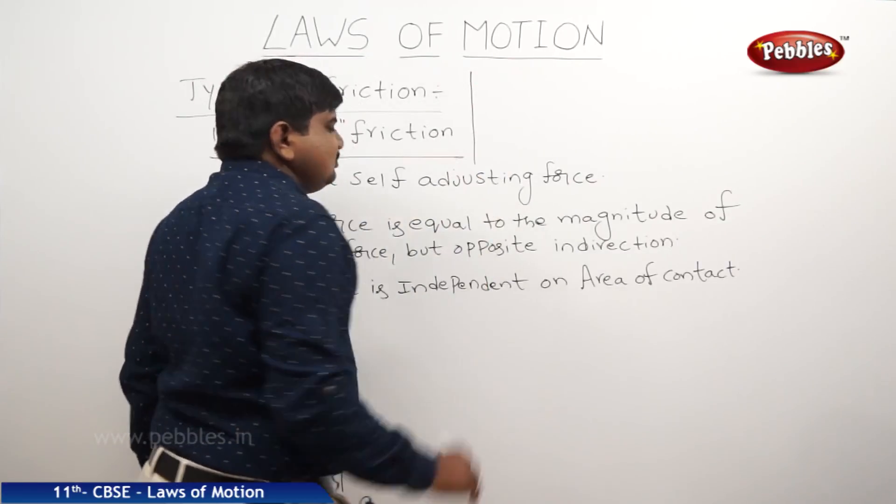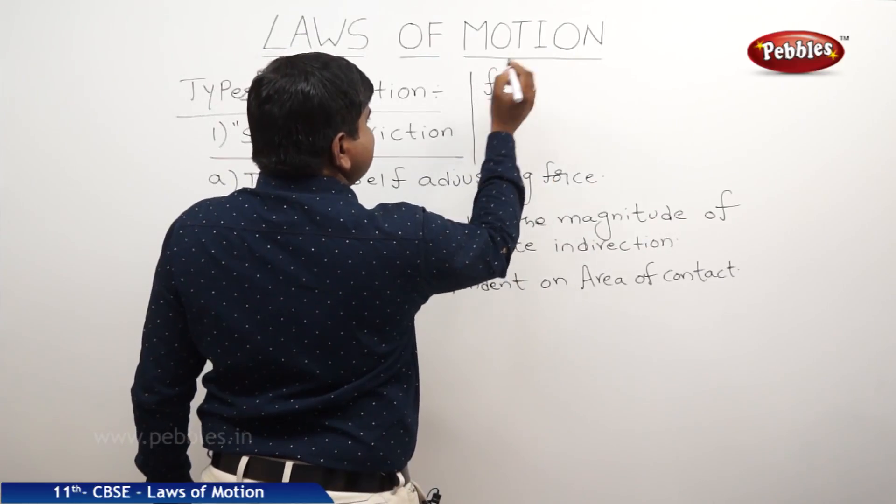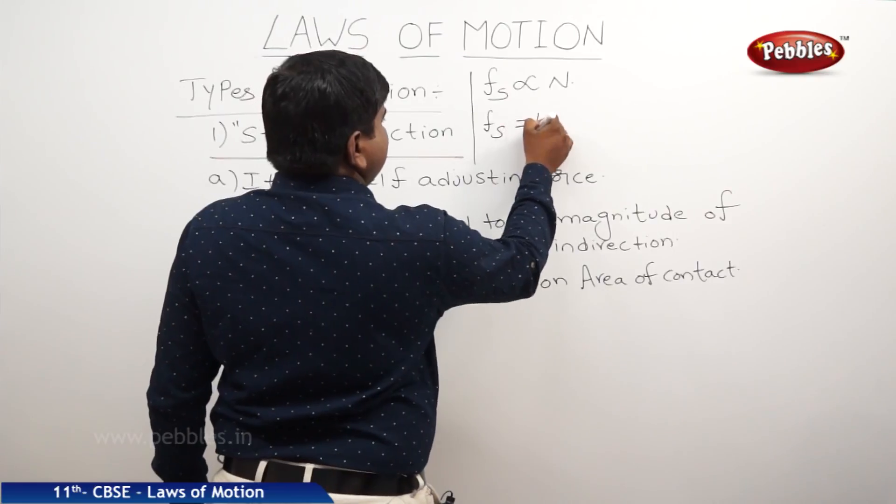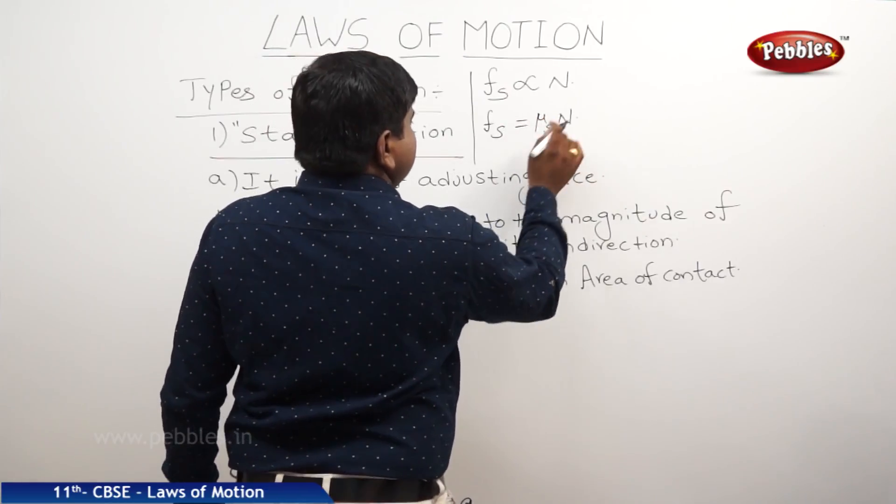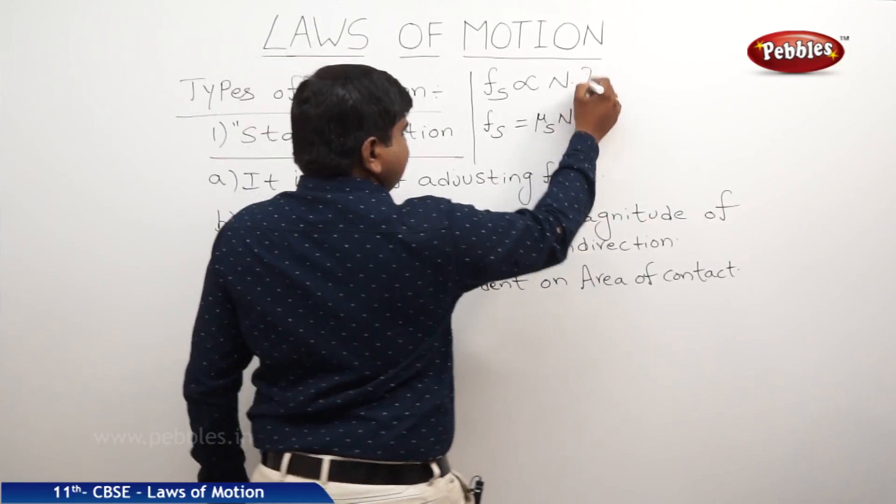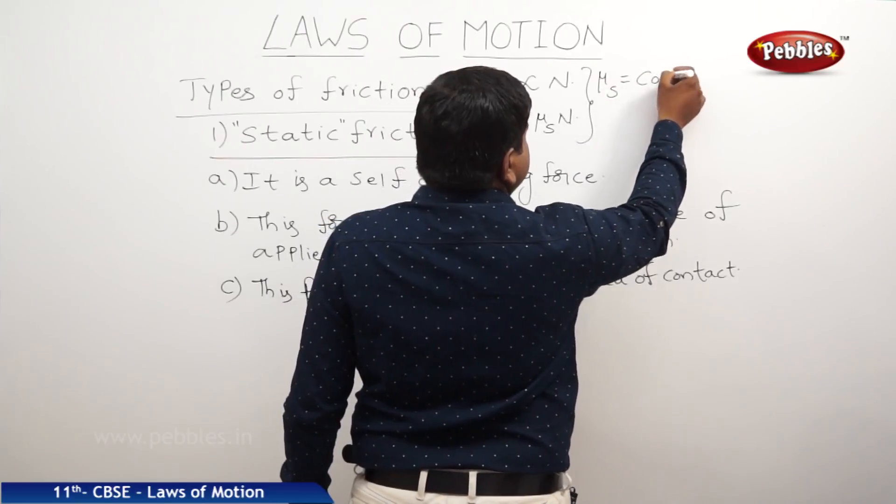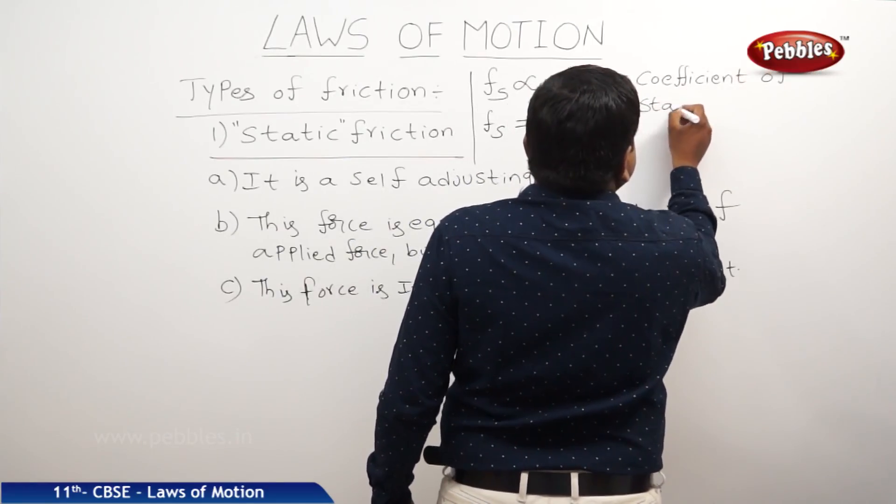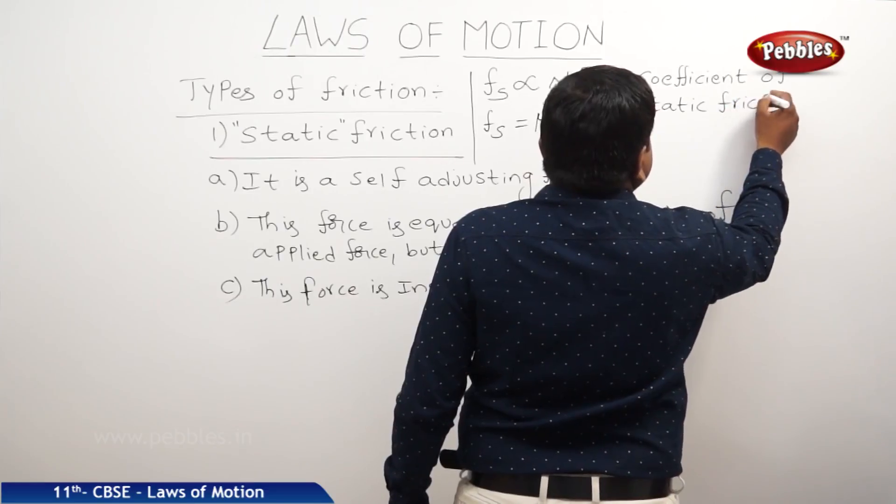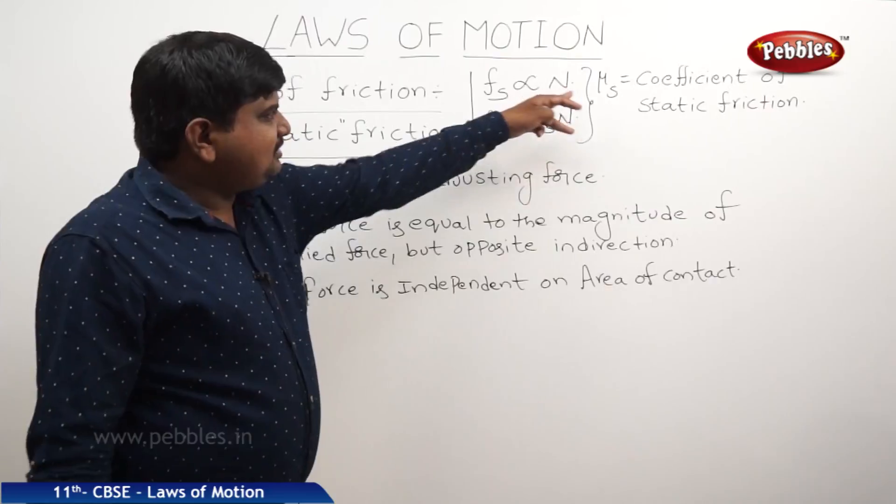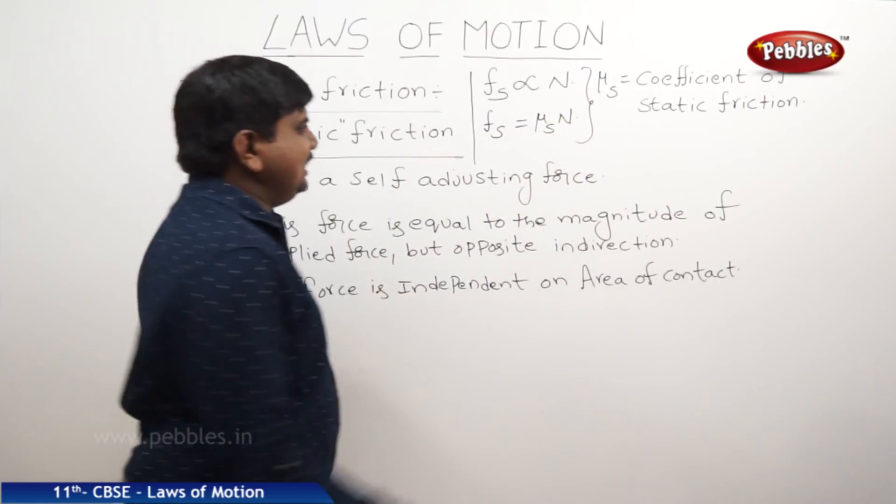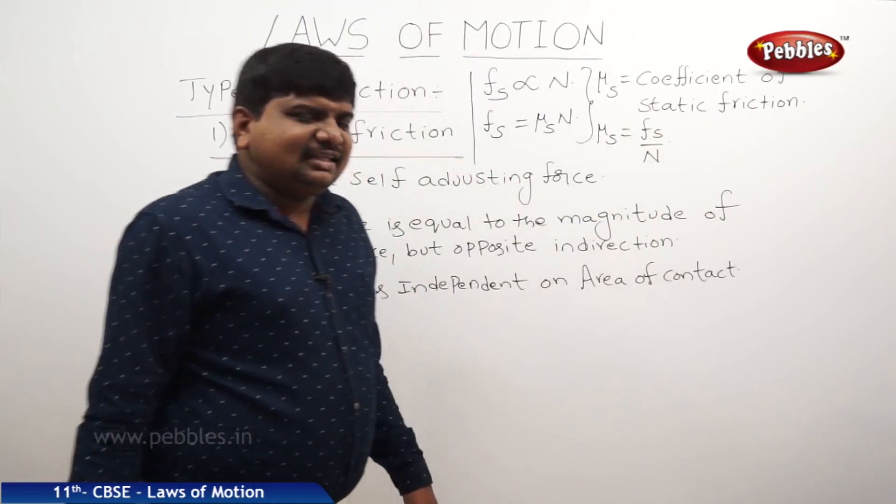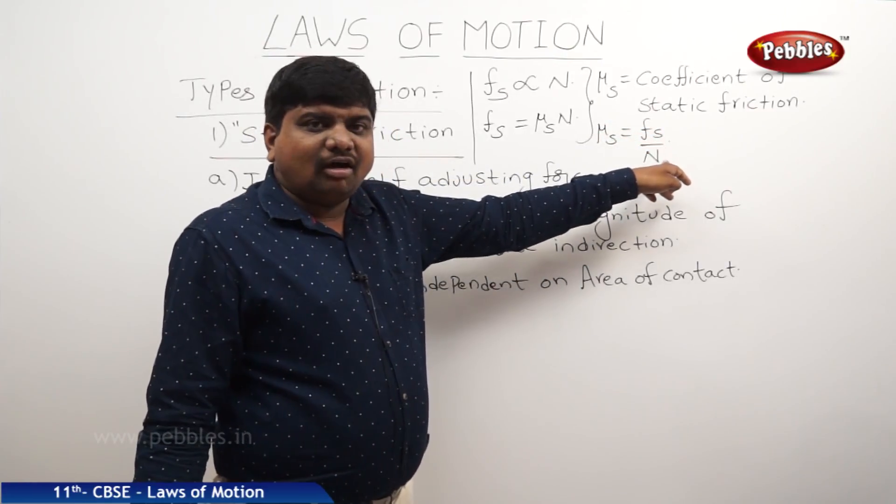Like this we can define the laws of static friction. One more: static friction Fs is proportional to normal reaction force. Therefore, Fs is equal to μs N. This μs is coefficient of static friction. So the coefficient of static friction is defined as Fs by N. It is the ratio between static friction to the normal force of reaction.